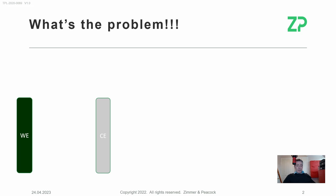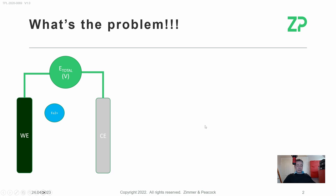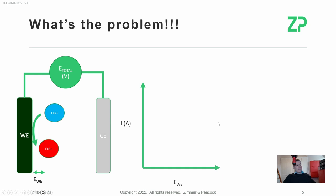If I take my working electrode and I have iron in there — it could be Fe²⁺ — and I apply a potential, then at the working electrode we will have a potential and the iron could oxidize to Fe³⁺. Now, this oxidation of Fe²⁺ to Fe³⁺ is very sensitive to the effective potential at that working electrode. Electrochemistry can be very sensitive to these potentials.